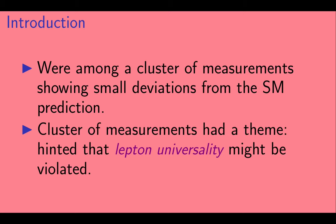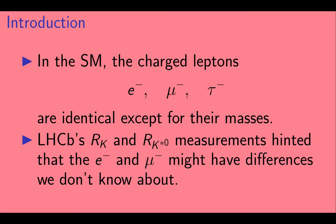And this cluster of measurements had a theme. They hinted at possible violations of something called lepton universality. So, what's lepton universality? In the standard model, the charged leptons, which are the electron, the muon, and the tau, are identical except for their masses. But it's possible that there is physics beyond the standard model, which differentiates between these three particles.